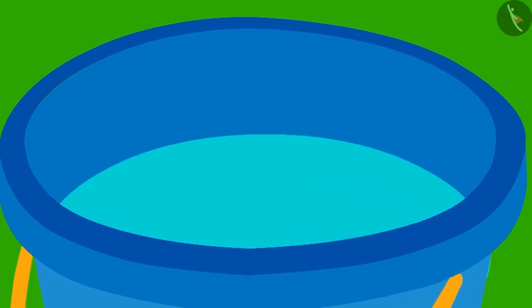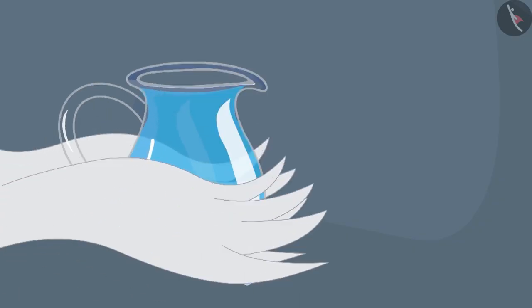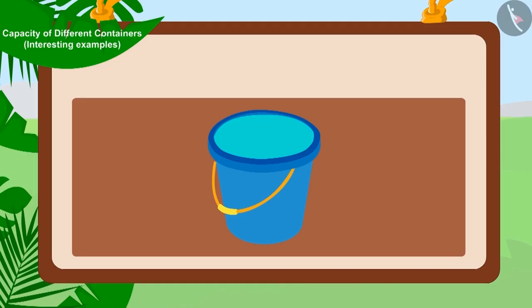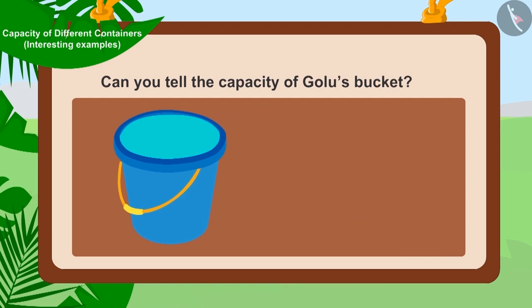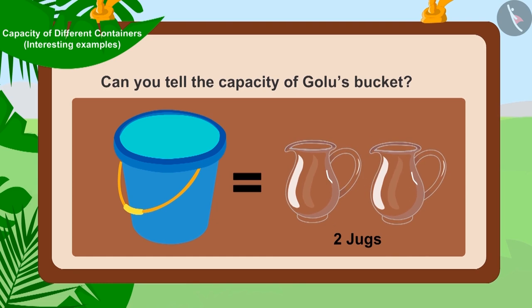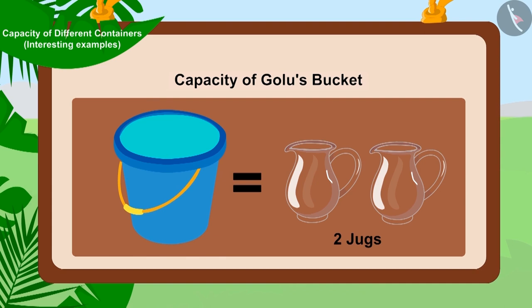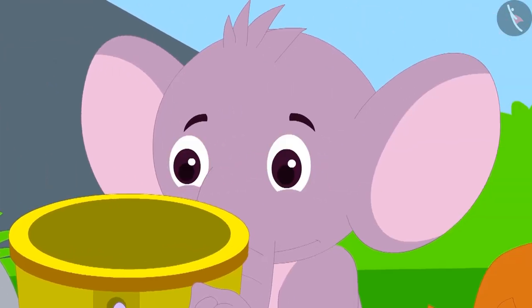Golu's bucket is still a little empty. Uncle once again filled his jug with water from the tank and poured the water from his jug into Golu's bucket. Now Golu's bucket was completely filled. Children, can you tell how many jugs is the capacity of Golu's bucket? That's correct — Golu's bucket was completely filled with two jugs of water, so the capacity of Golu's bucket is two jugs.